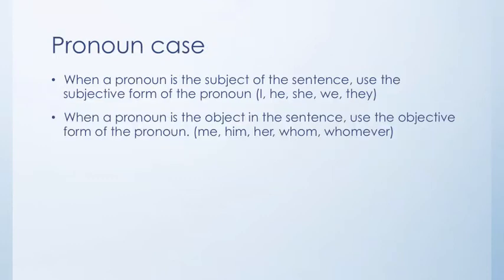Pronoun case: when a pronoun is the subject of a sentence, use the subjective form — I, he, she, we, they. When a pronoun is the object in the sentence, use the objective form — me, him, her, whom, whomever. If you are not sure about subjective case and objective case, pause the video and do an internet search for subjective and objective case to get a better understanding, because from here on that's going to make a big difference.